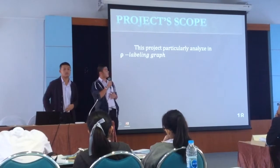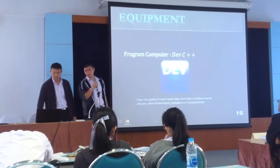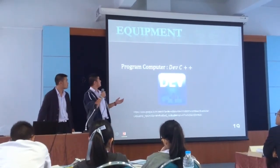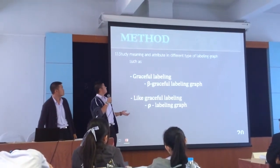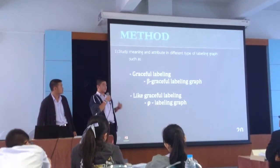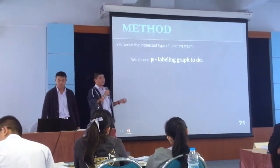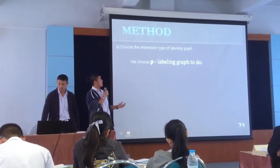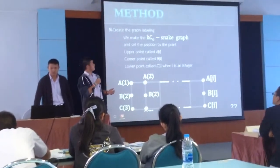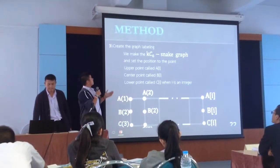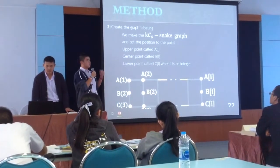This is my project scope. This project will practically analyze low labeling graph. In our equipment, we use a computer with DFC to help the project. Our method was to study the meaning and attributes of different types of labeling graph, such as graceful labeling graph and other types of labeling graph. Second, choose the labeling graph to study. In this project, we chose the low labeling graph. So we create the labeling and make the KC_6 net graph, then set the position of the graph.